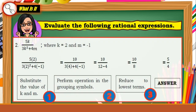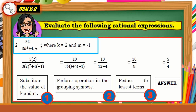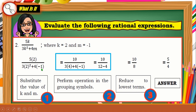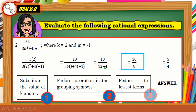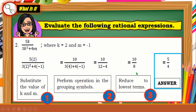Let's move on to the second example: 5K over 3K squared plus 4M, where K equals 2 and M equals negative 1. Step 1: substitute the values of K and M — K is 2 and M is negative 1. Step 2: perform operations in the grouping symbols — 3 times 4 and 4 times negative 1 equals 12 minus 4. Step 3: reduce to lowest term. 10 over 8 simplifies to 5 over 4, or 5 fourths.